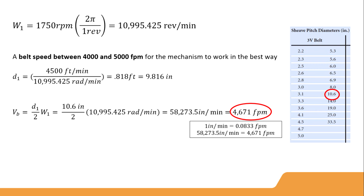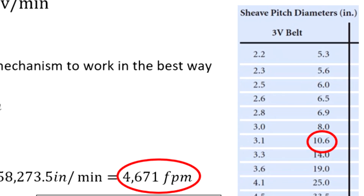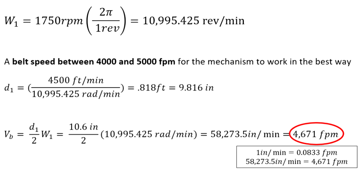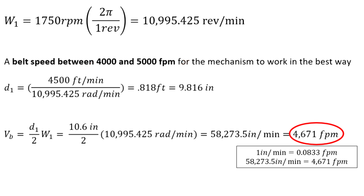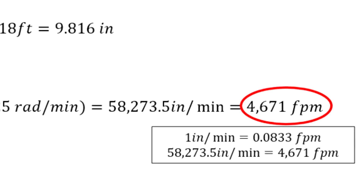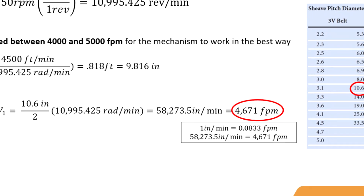That is not all — we also need to find the pitch diameter. With this, we can also find the diameter of the belt. We need to take into account that the belt speed must be between 4,000 and 5,000 FPM (feet per minute). Doing some calculations, we can see that the velocity of the belt is between 4,000 and 5,000 FPM. To support the mechanism given by the machine, we use bearings in order to obtain the best performance.